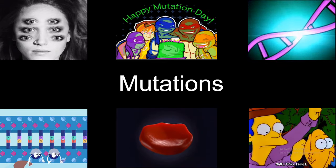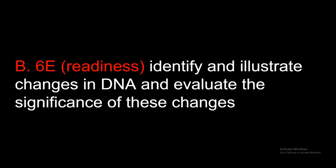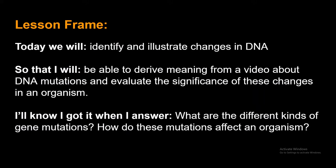But first, let's look at our objectives. Today's Texas Essential Knowledge and Skills, or TEKS, is B6E, where we will identify and illustrate changes in DNA and evaluate the significance of these changes. Our lesson frame: today we will identify and illustrate changes in DNA so that you will be able to derive meaning from a video about DNA mutations and evaluate the significance of these changes in an organism.